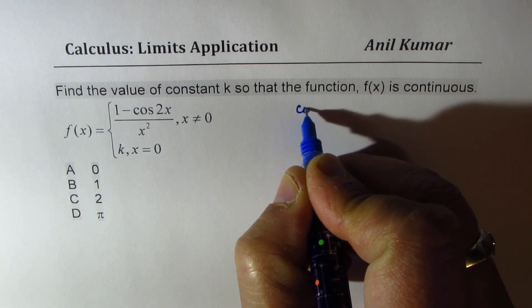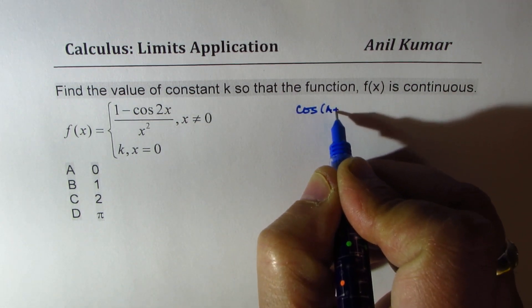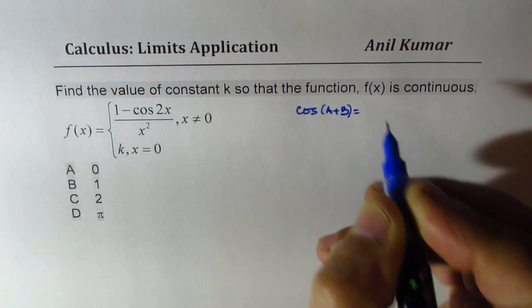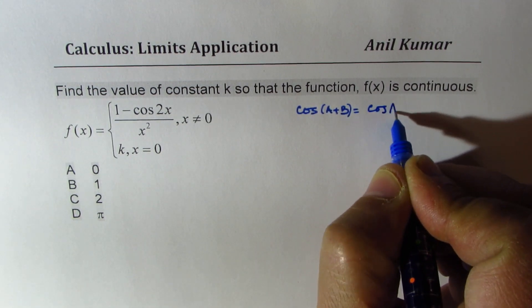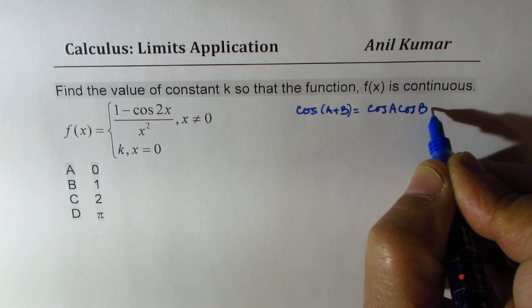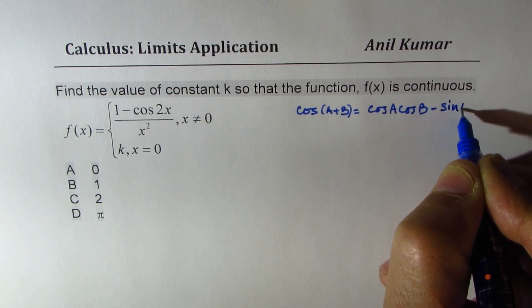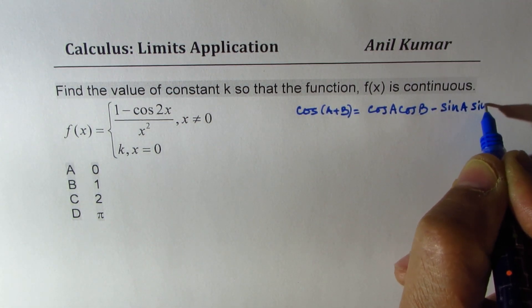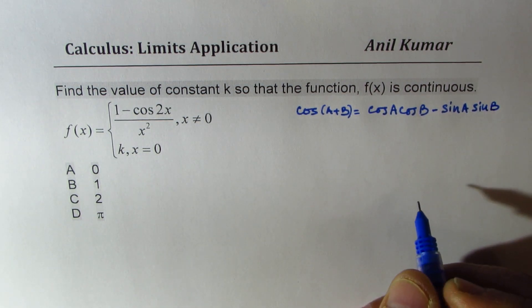You remember the formula. What is cos(a + b) equals to? That is equals to cos a cos b minus sin a sin b. So that's the compound angle formula.